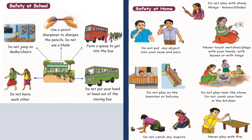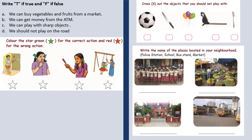The first one is wrong because the boy is putting a plug into the socket, which is very dangerous. The second one — the girl is putting sharp things in her nose, which is again a wrong action. The third one — the child is holding sharp objects in her hand, which is again a wrong action. The fourth one is a child swinging slowly on the swing, which is a correct action, and she has adult supervision. Now, cross out the objects that you should not play with. The answers are: sharp knife, lighter, and a fork.